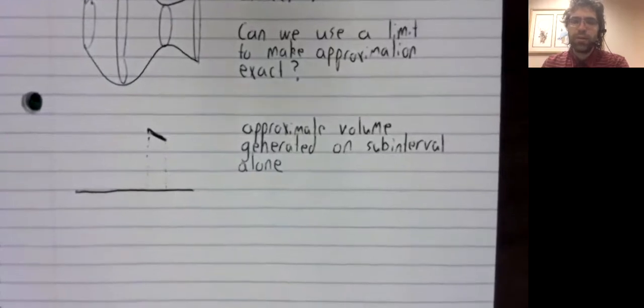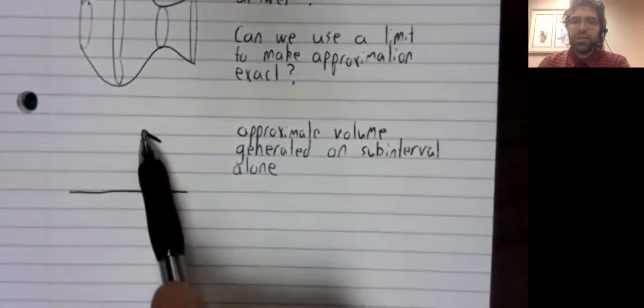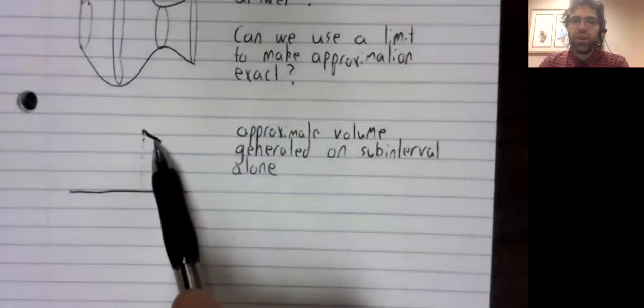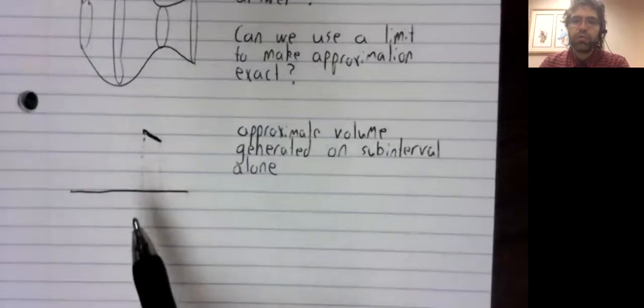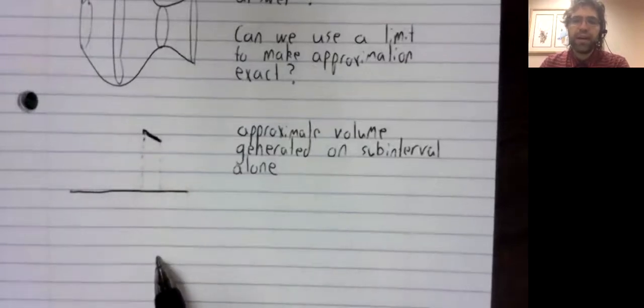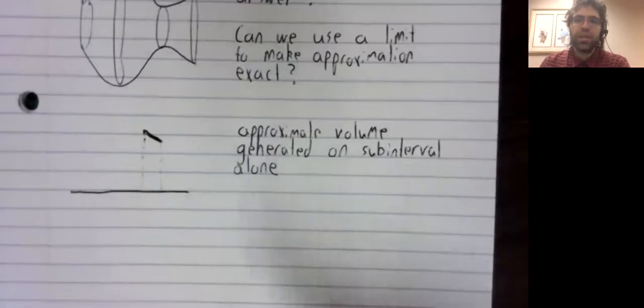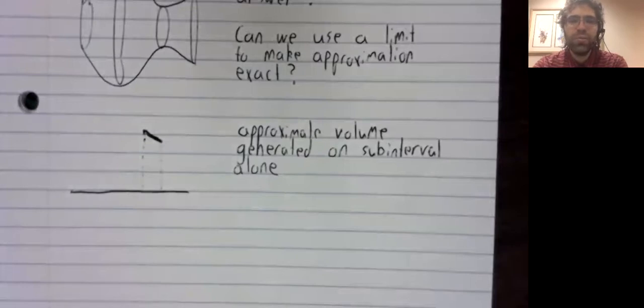Then we can repeat this process with all of the other sub-intervals and add our approximations up. Well, if we take this little piece of the curve and rotate it around the x-axis, that's still not a figure whose volume we know.